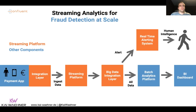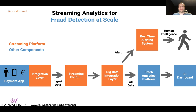A typical pipeline for streaming analytics looks like this — on a high level it's very simple. You get the data in from a payment app that end users have on their mobile device or web browser to do transactions. You get this data into the streaming platform for more processing and integration with other things — on one side with real-time systems like alerting, and on the other side you ingest all data into a batch analytics platform for reporting and BI tools.